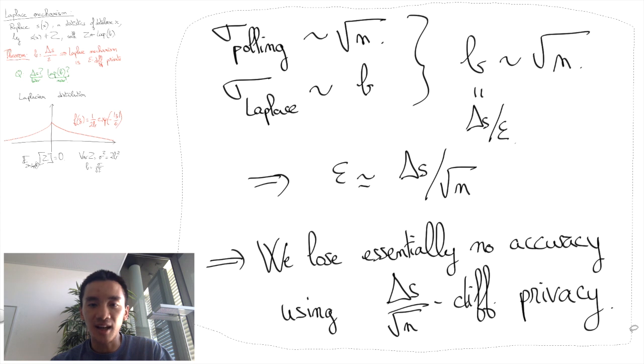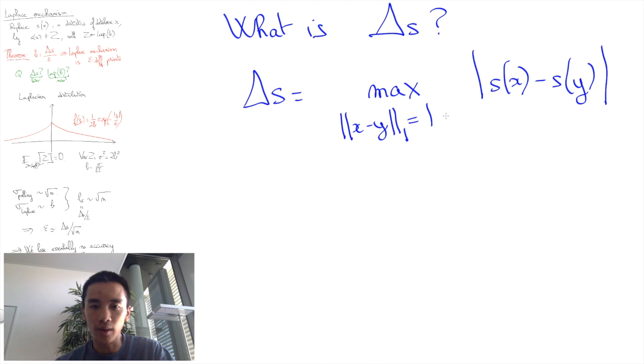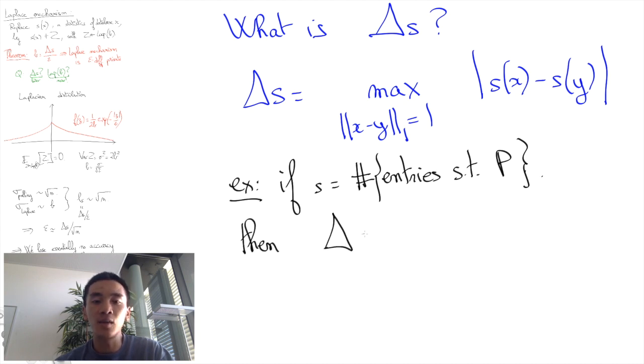Now, what is delta S? It is the maximal variation of the statistics S between neighbor databases, i.e., delta S is the maximum of the distance between S of X and S of Y, when the L1 norm of X minus Y is equal to 1. In particular, if S counts the number of entries satisfying some property P, then adding or removing one entry will only increment or decrement S by at most 1. Thus, delta S is equal to 1.